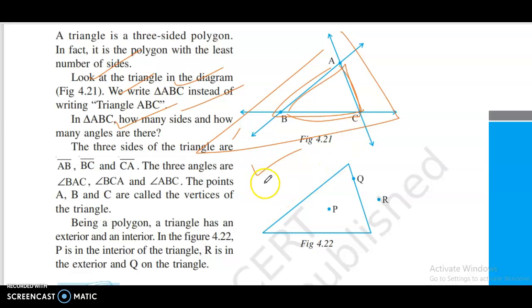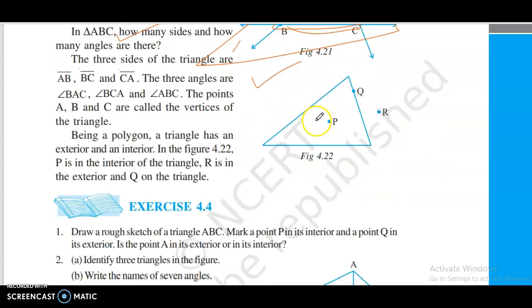The points of each are called the vertices of the triangle. Being a polygon, the triangle has an exterior and interior. In figure 4.22, P is in the interior of the triangle. R is in the exterior.